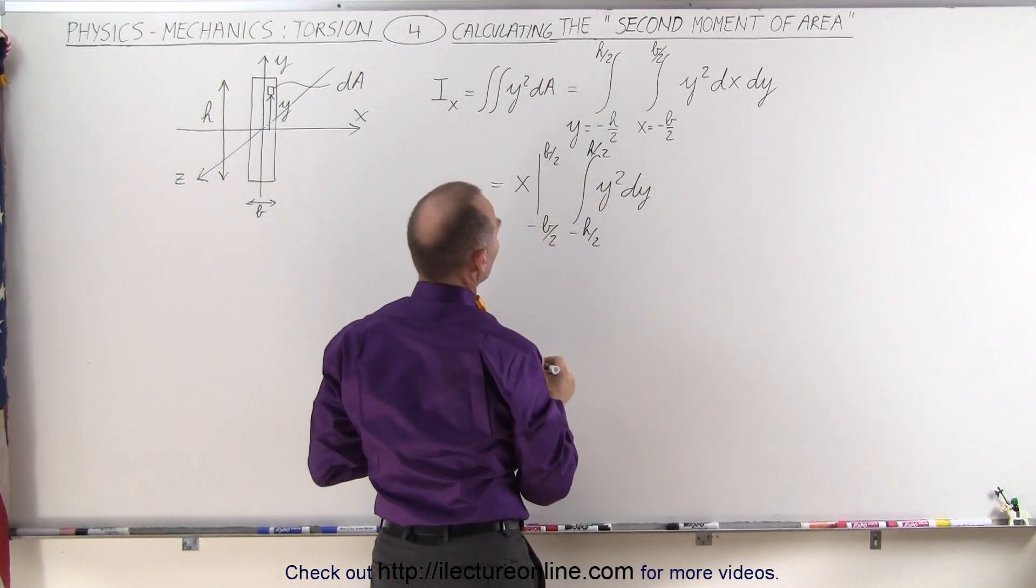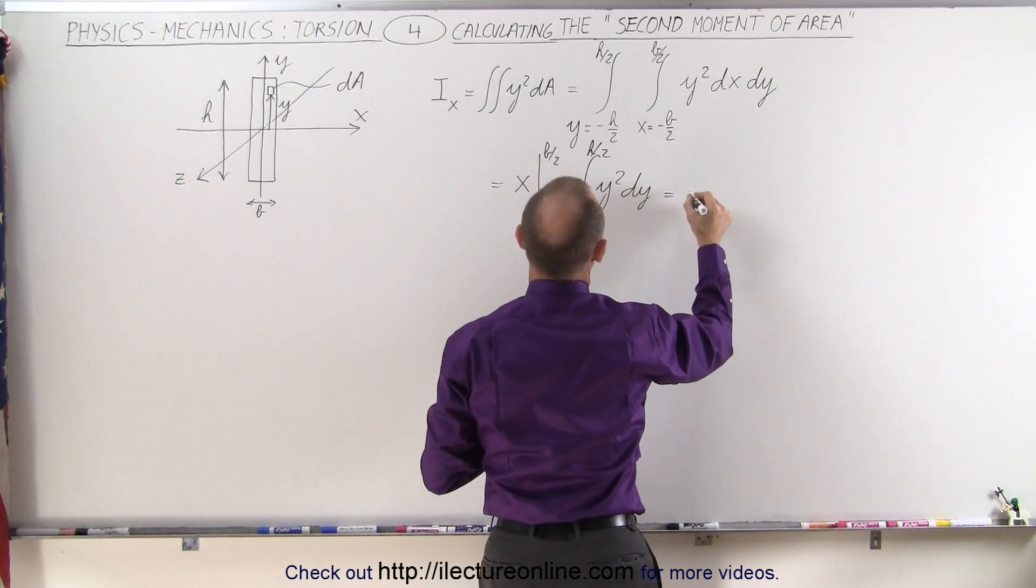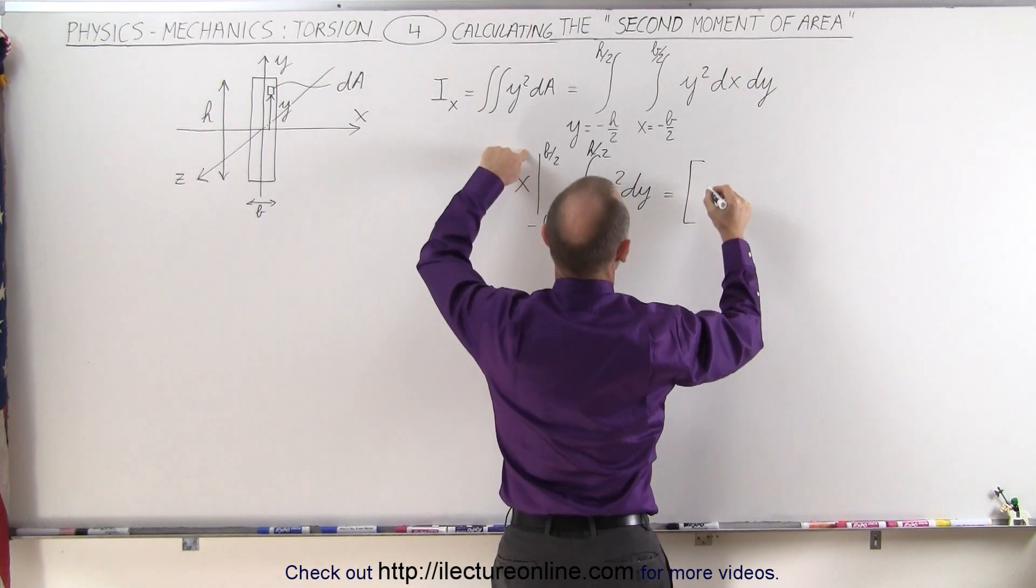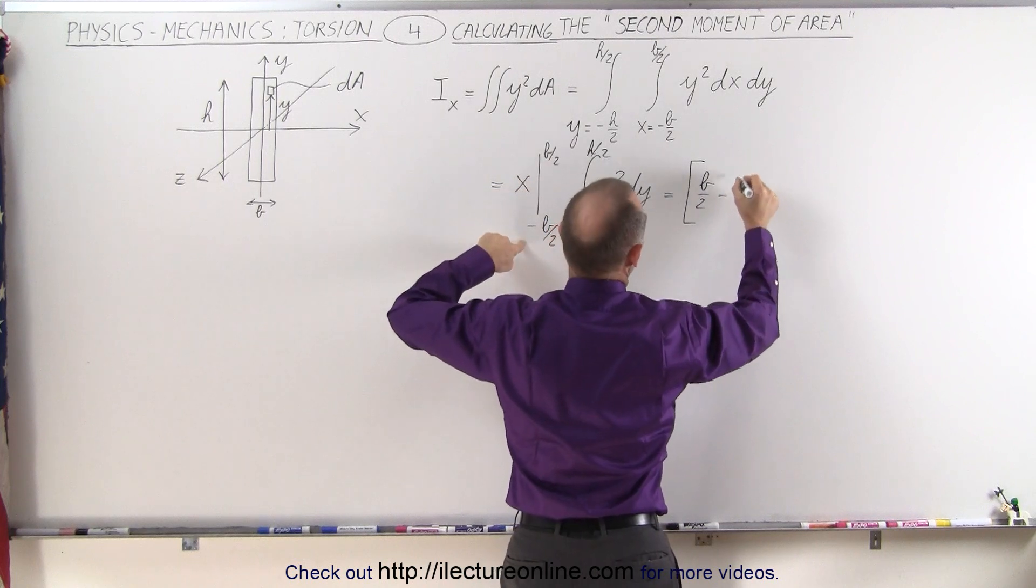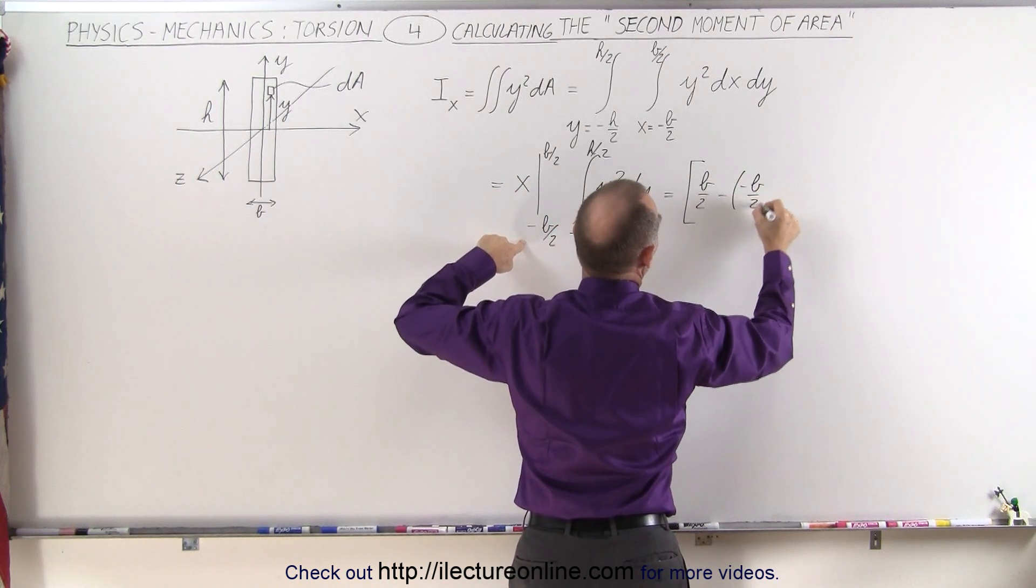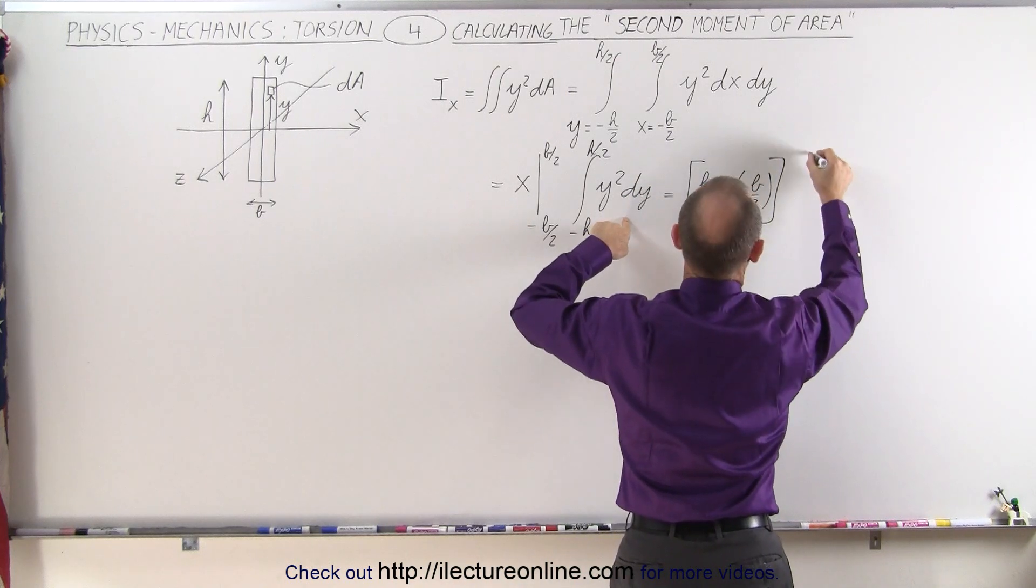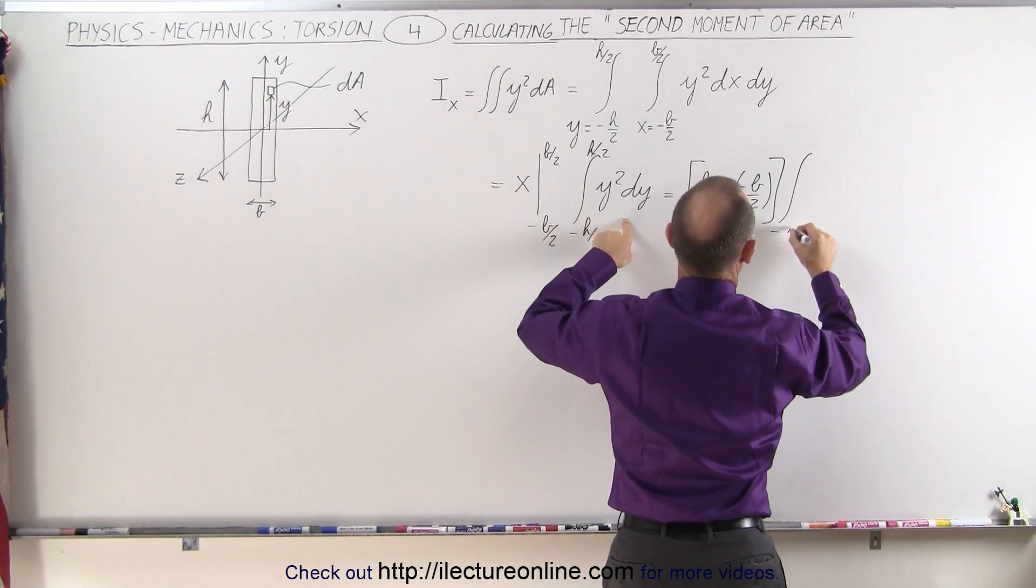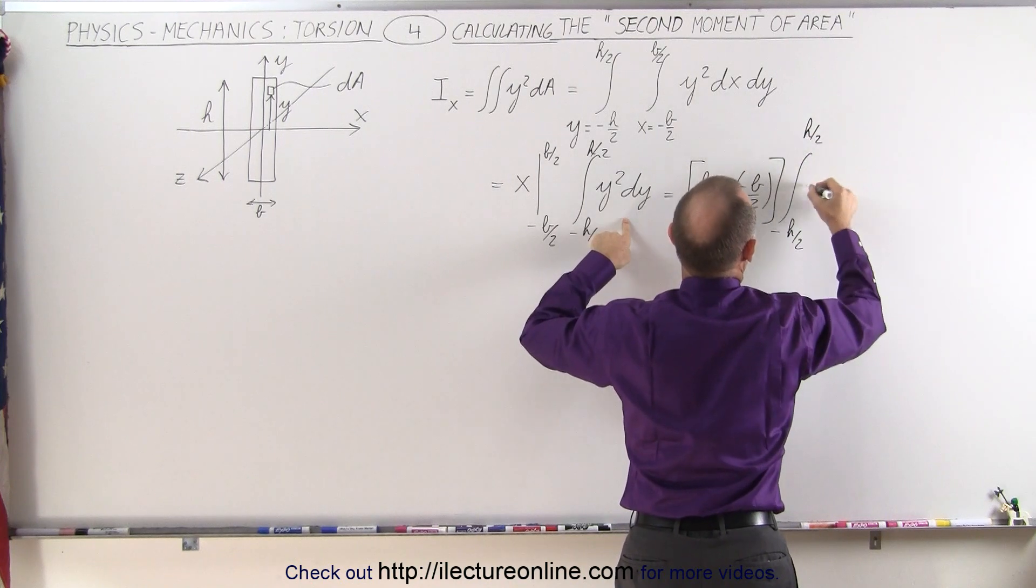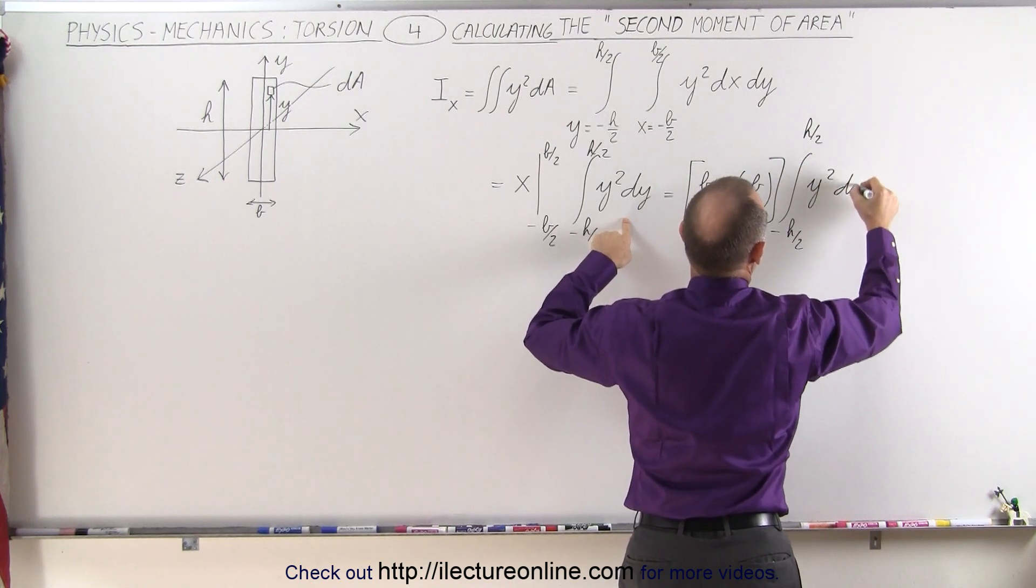When we plug in the limits, then we get the following. This is equal to, plug in the upper limit, we get b over 2 minus, when we plug in the lower limit, we get minus b over 2. And we multiply that times the integral of minus h over 2 to plus h over 2 of y-squared dy.